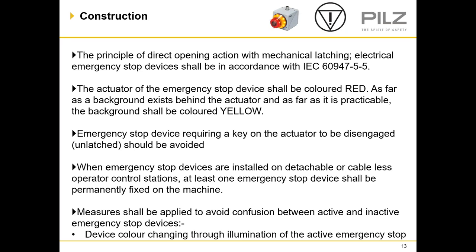Moving on to the construction of emergency stops and the principle of direct opening action with mechanical latching. Electrical emergency stop devices shall be manufactured in accordance with IEC 60947 part 5. The actuator of the emergency stop shall be coloured red, and the background behind the actuator shall be coloured yellow. The actuation of the emergency stop contacts should be made through a rigid member which directly affects the contacts. Emergency stop devices requiring a key to be disengaged or unlatched should be avoided, as these could be a source of injury to the hand of the operator.